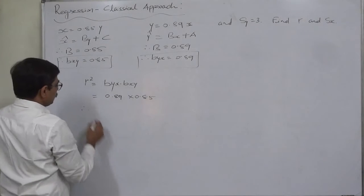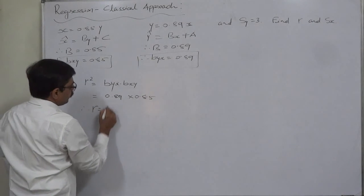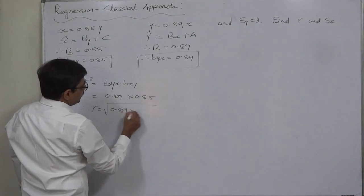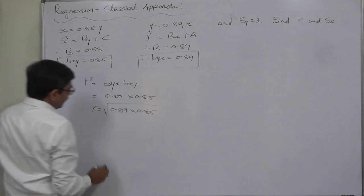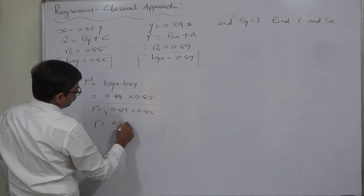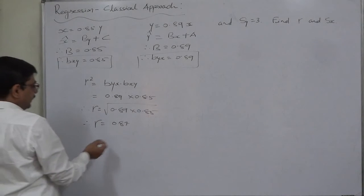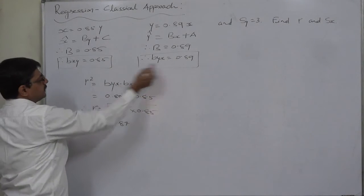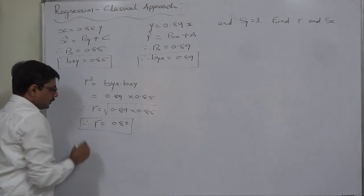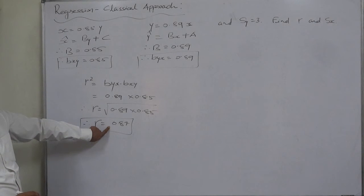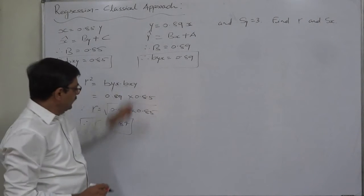But we are more interested in coefficient of correlation. So coefficient of correlation is square root of these two. Please use the calculator and find the answer, and it will be approximately 0.87. It is also positive because these two are positive. So we have the coefficient of correlation for this data: 0.87.